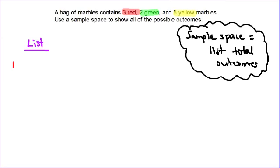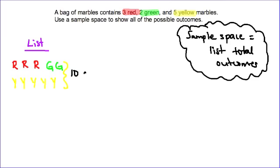I'm going to list out all the different outcomes. We have three red marbles, so I'll use R, R, R to represent them. I've got two green marbles: G, G. And I have five yellow marbles: Y, Y, Y, Y, Y. By looking at the list we can total up that the total number of outcomes is 10. Then we can use this information to help us determine the probability of different events.